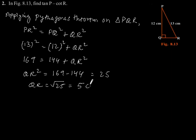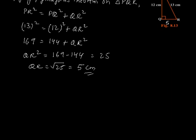Now let us find tan P. Tan P equals side opposite to angle P divided by side adjacent to angle P.